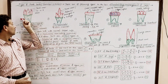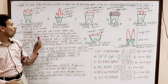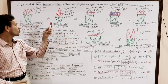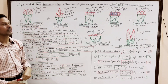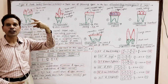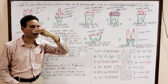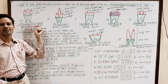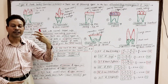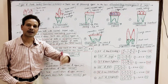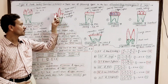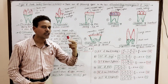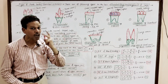The first type is triconodont, or tricuspid cheek teeth. In triconodont, there are three cusps which are arranged in a row — in a series. These tricuspid teeth are characteristics of some fossil mammals.